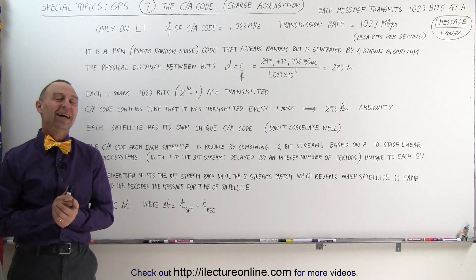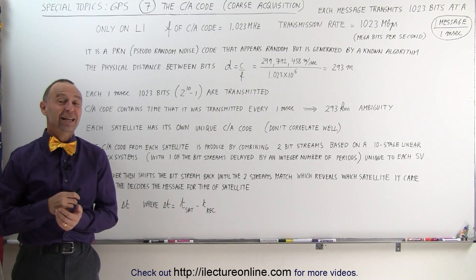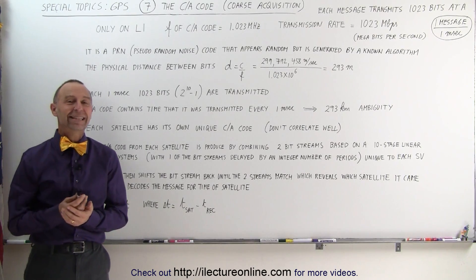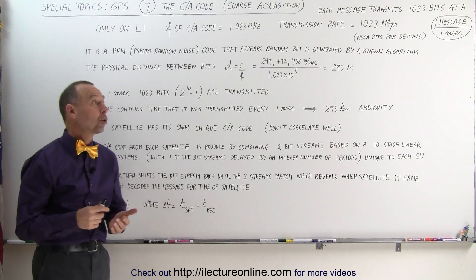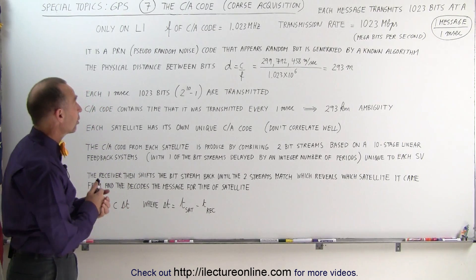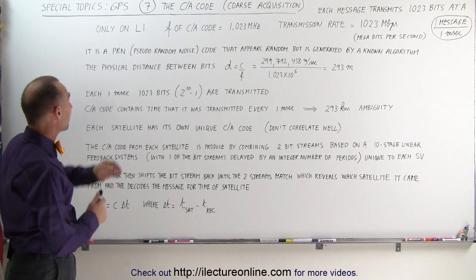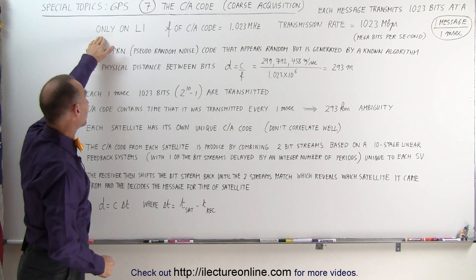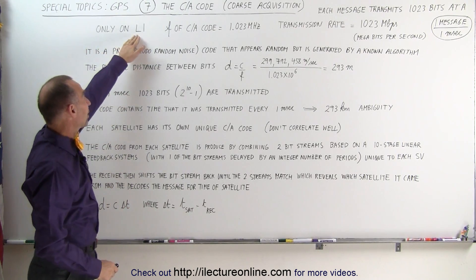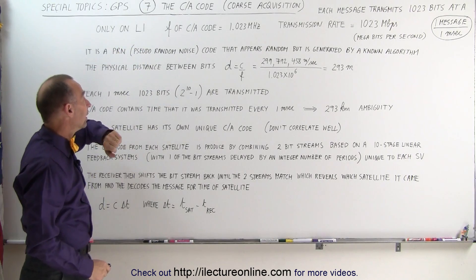Welcome to ElectronLine. Now let's take a closer look at the CA code, what we know as Coarse Acquisition code. Remember that it's only available on the channel L1.